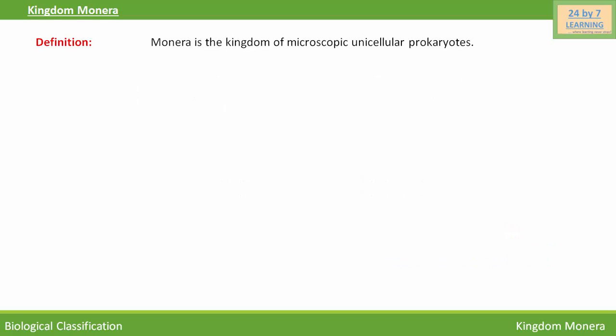Monera is the kingdom of microscopic unicellular prokaryotes. That means their nucleus is primitive type, not well organized. Genetic material is found free in their cytoplasm.